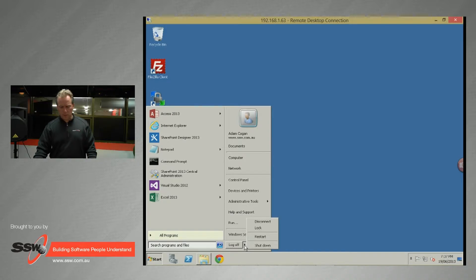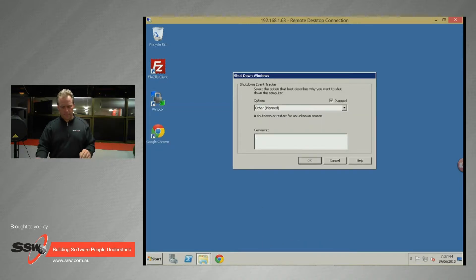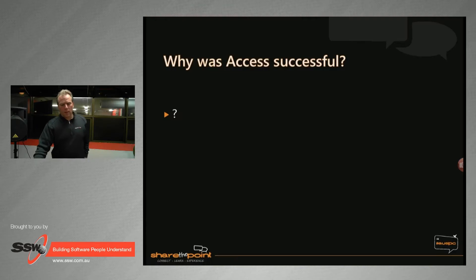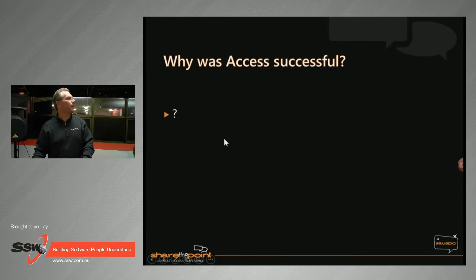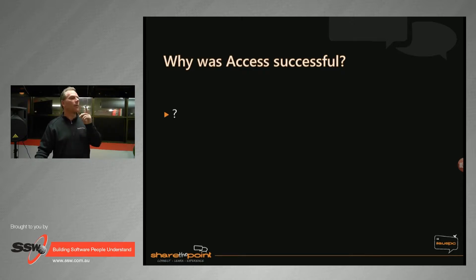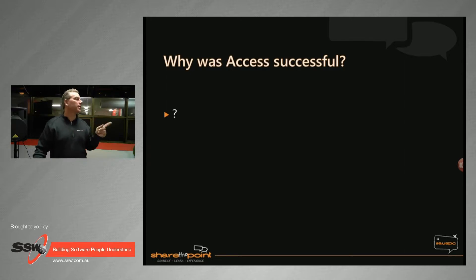Something is not quite right — it could be to do with some updates I shouldn't have installed. I'm going to do something not very smart: I'm going to reboot this server because I can't think of anything else. That's going to take about 10 minutes, so I'll ask someone to go through and make sure you can create an Access app and open Central Admin.